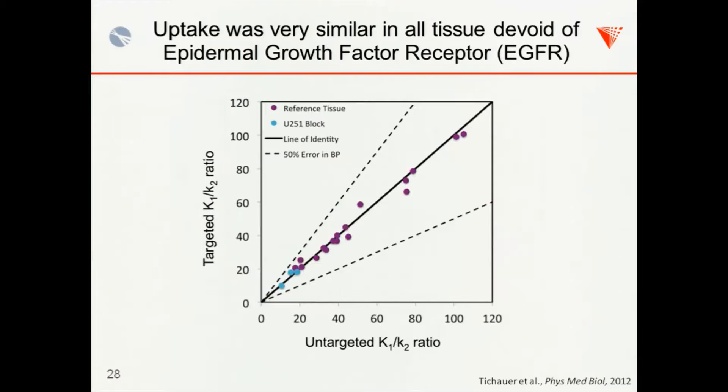And then, so if we replot that correlation now, but instead of the reference tissue K1 over K2 on the x-axis, we replace that with the untargeted tracer K1 over K2. Then all of a sudden we get a very nice correlation, which suggests that we can use that simplified reference tissue model using our tracer instead. And we avoid having to try and find the ideal receptor reference tissue for tumors.